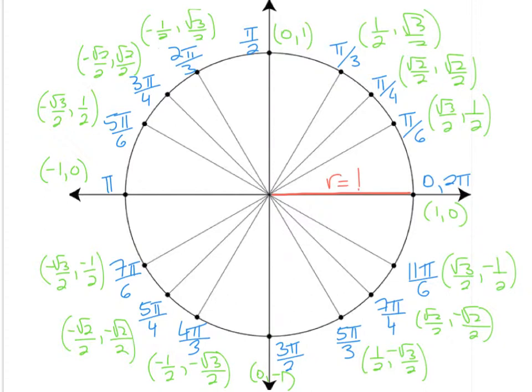Now let's talk about our green values. All we have is a circle with radius 1. So you know this point right here is going to be (1, 0). This is going to be (0, 1). And at 180 degrees, it's going to be (−1, 0). And here we have (0, −1).